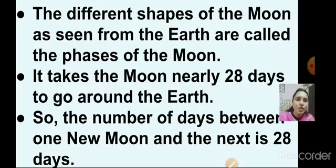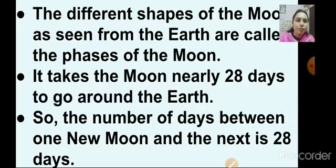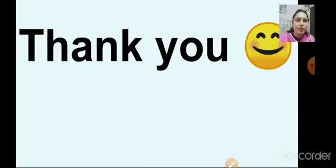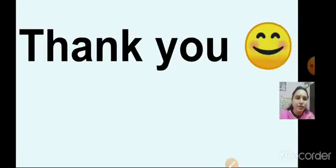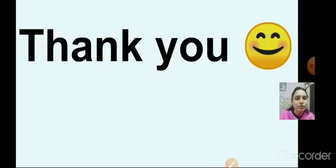The different shapes of the moon as seen from the earth are called the faces of the moon. It takes the moon nearly 28 days to go around the earth, so the number of days between one new moon and the next is 28 days. We shall meet in the next science session. Thank you, and read the lesson.